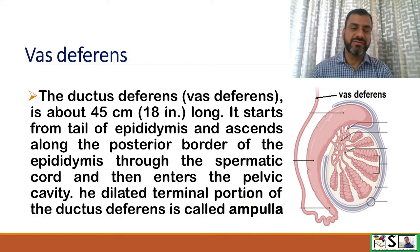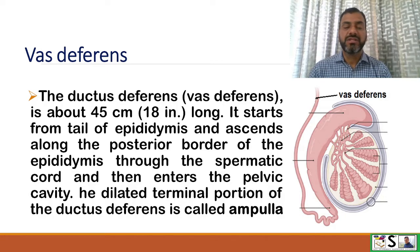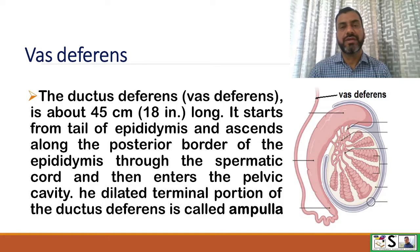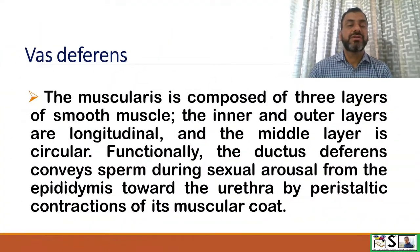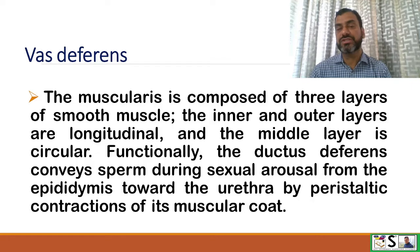The ductus deferens is about 45 cm long. It starts from the tail of the epididymis, ascends along the posterior border of the epididymis, passes through the spermatic cord, and then enters the pelvic cavity. The terminal dilated portion of the ductus deferens is called the ampulla. The muscularis is composed of 3 layers of smooth muscle — inner and outer longitudinal layers and a middle circular layer. Functionally, the ductus deferens conveys sperm during sexual arousal from the epididymis toward the urethra by peristaltic contractions.